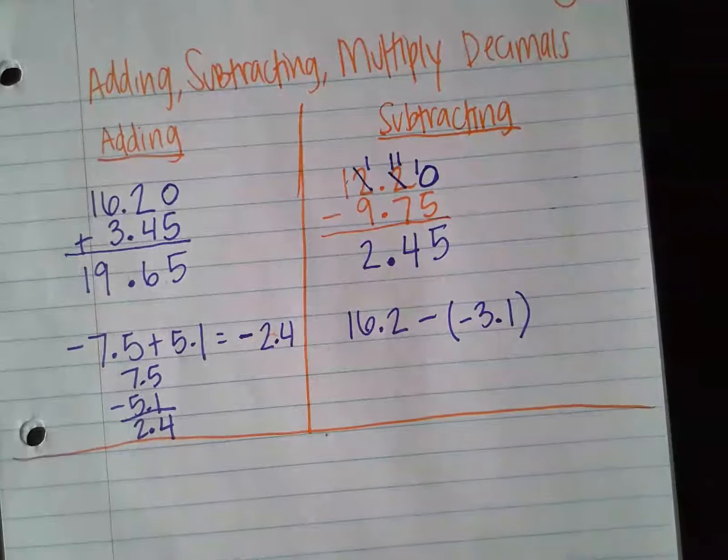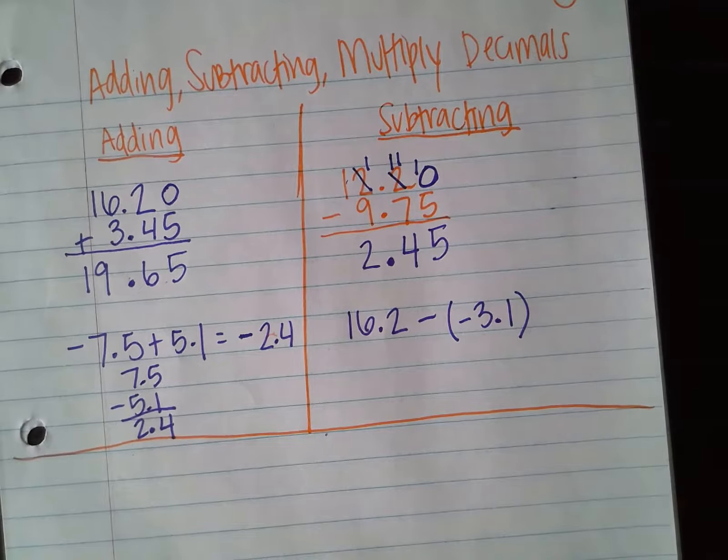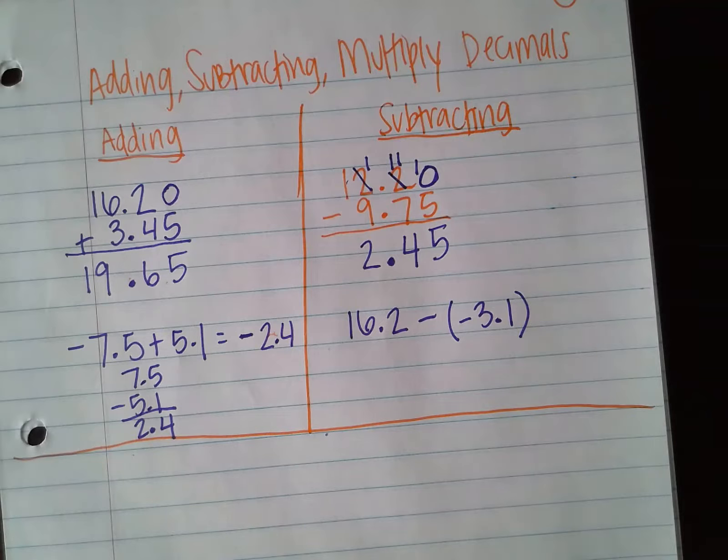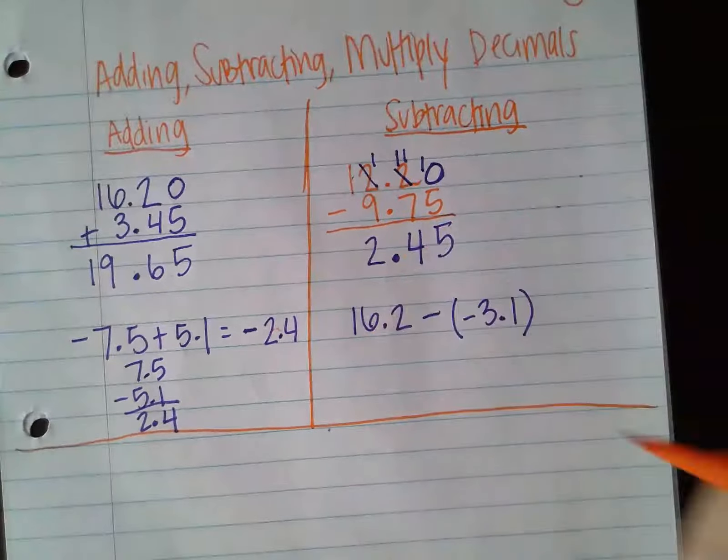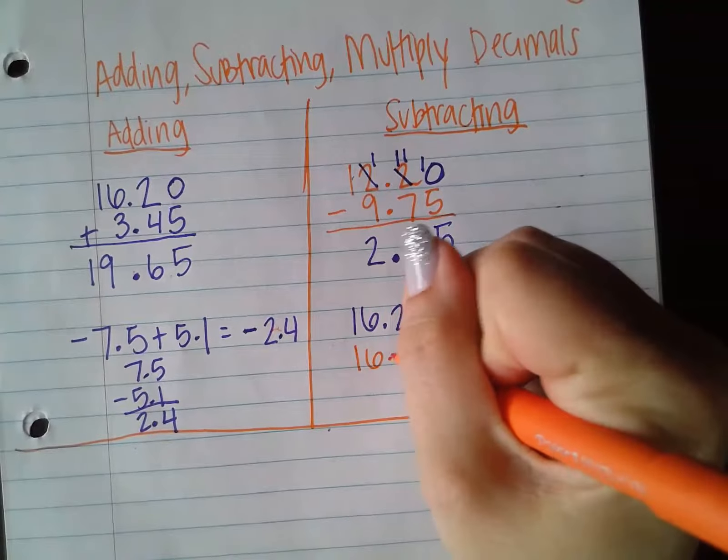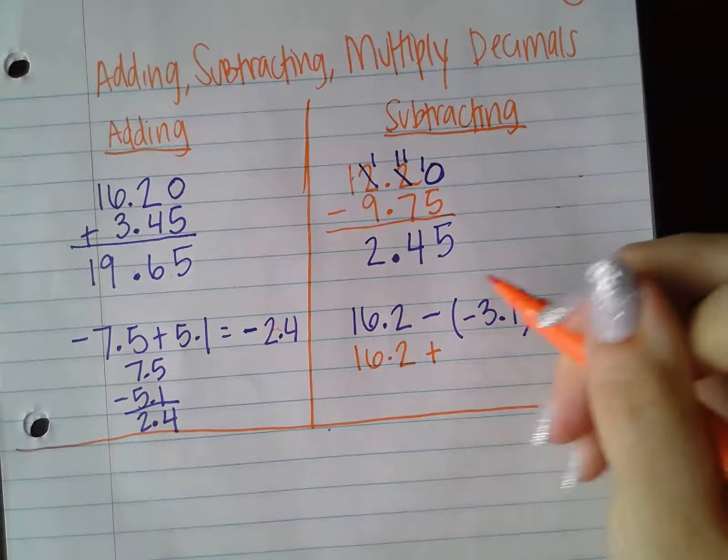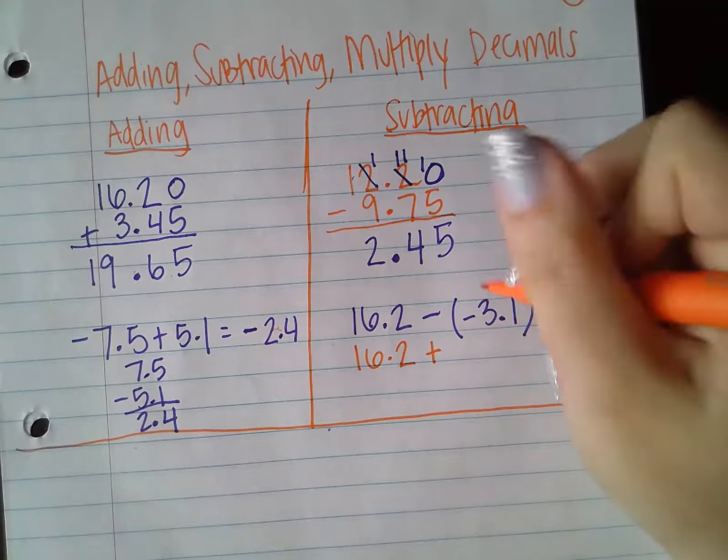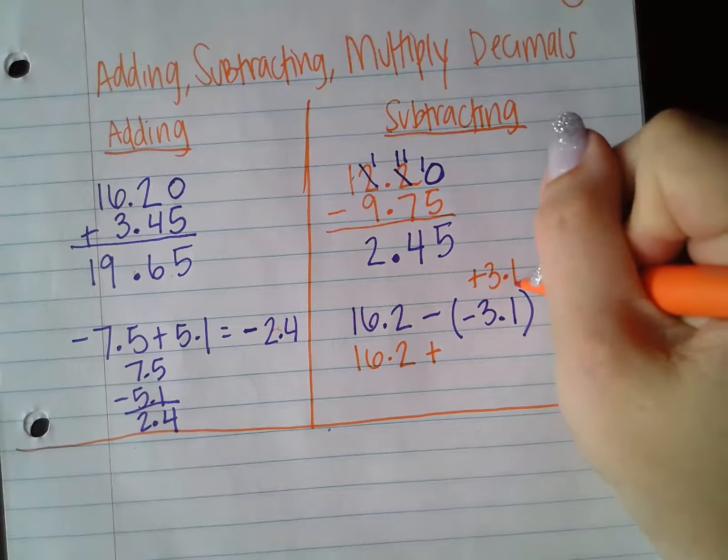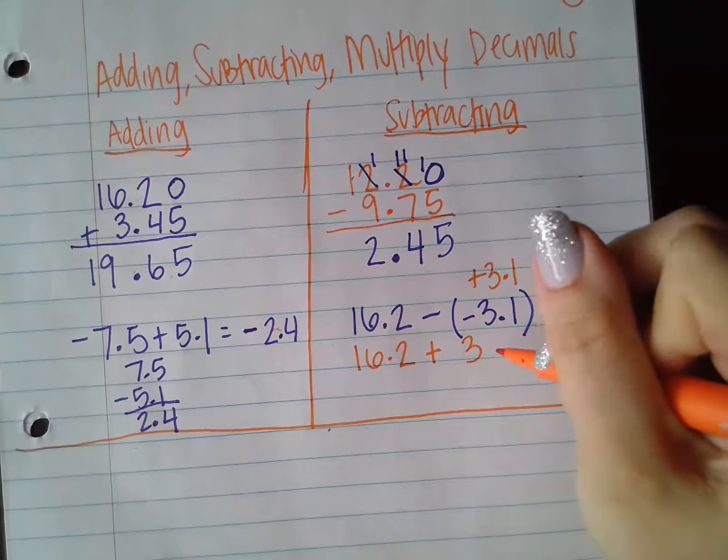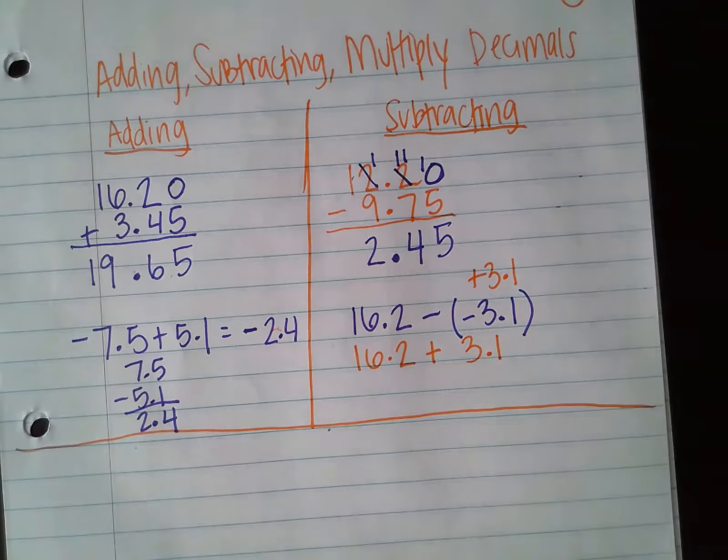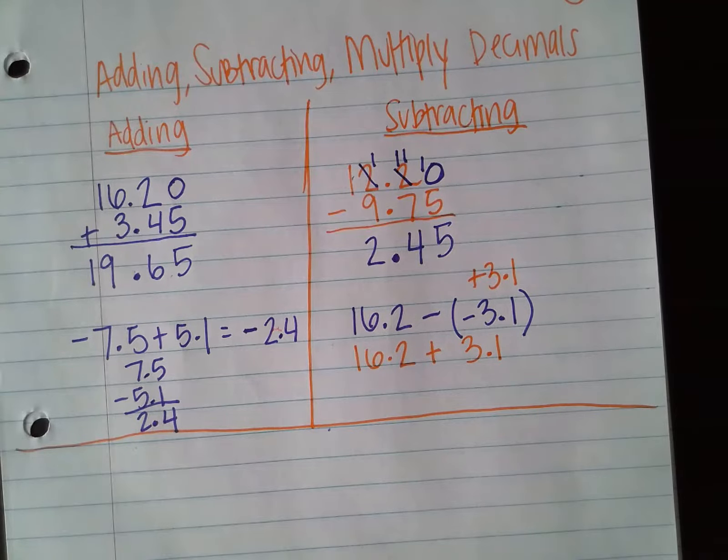Now, if I go back and look at some examples of subtracting a negative, or if I go back and look at my rules, subtracting a negative or just subtracting in general, we can follow the process of what's called adding the opposite. So I can rewrite this problem as 16.2 plus the opposite of negative 3.1, which is just going to be positive 3.1. So this right here, 16.2 plus 3.1, that is the same problem.